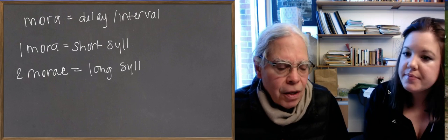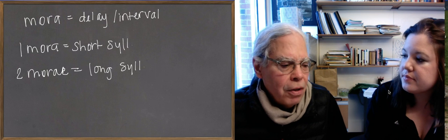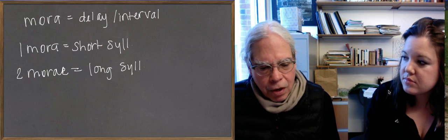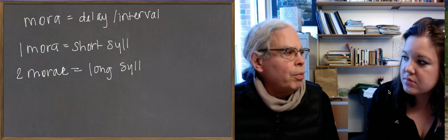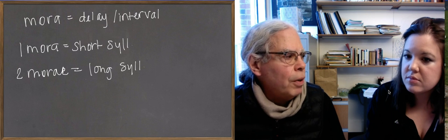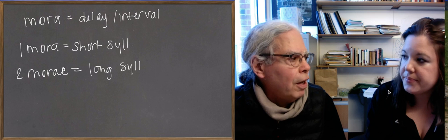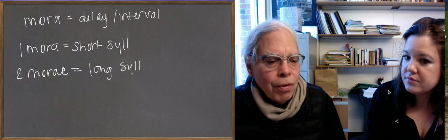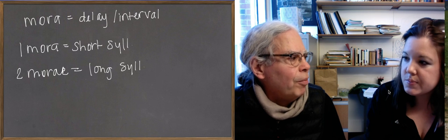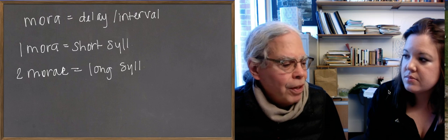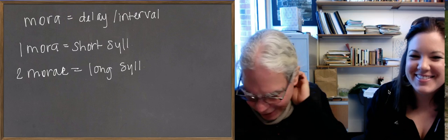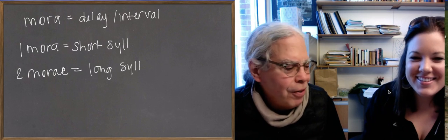An acute accent can stand on either a long or short syllable, and it stands on any of the last three syllables of the word. In Greek, it's only the last three syllables of a word that are important for purposes of accentuation — of the accentuation system we've inherited. It's not entirely true, because it's clear that other syllables could be accented, but they just didn't mark them.